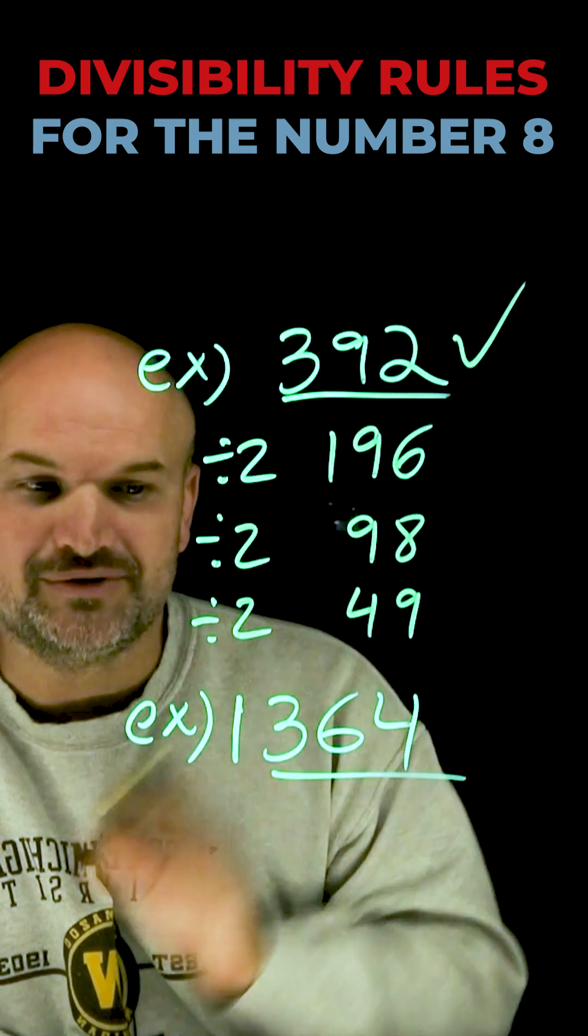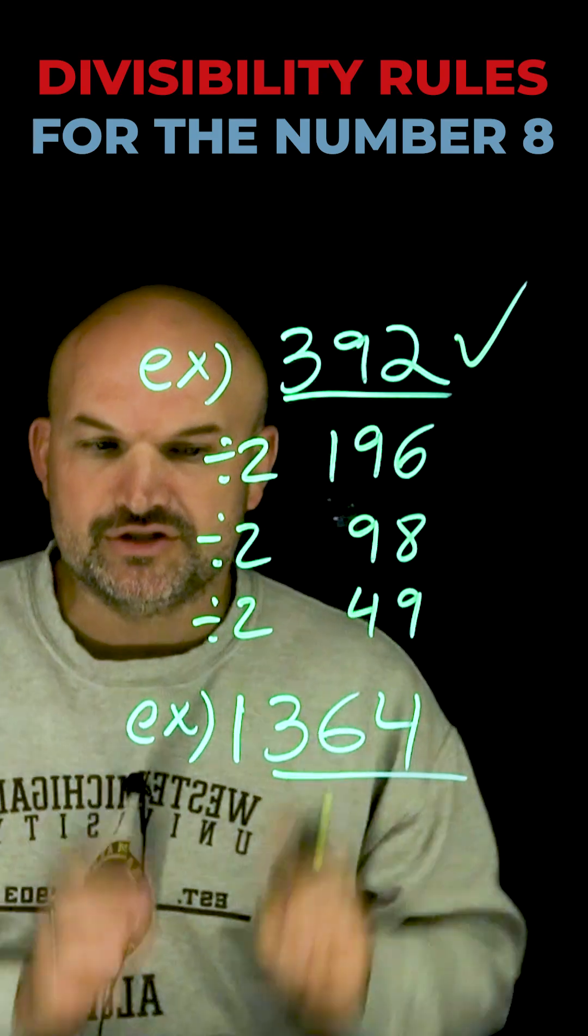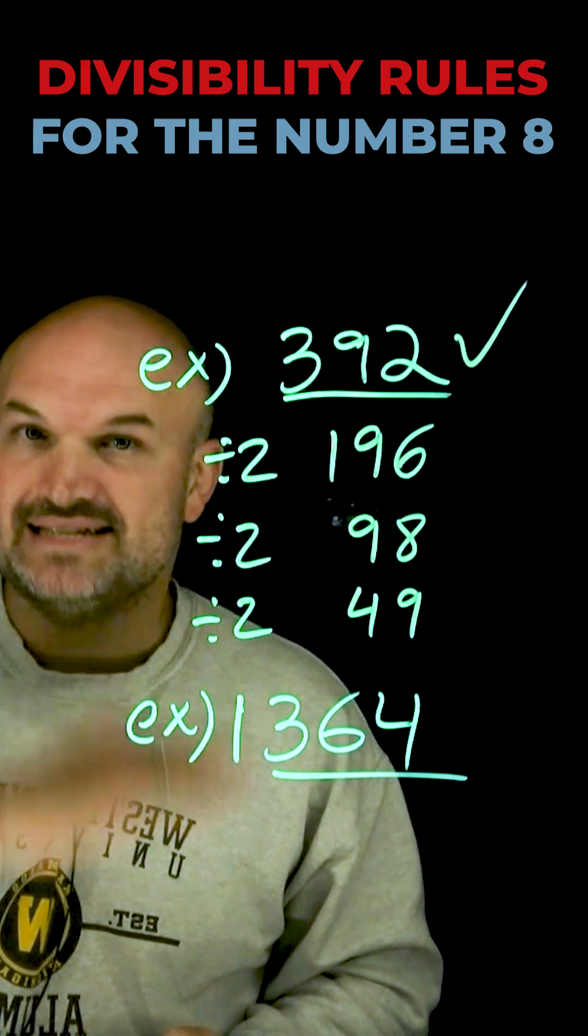Obviously, we have our three digits. Our last three digits are not 000, right? So, again, what we want to be able to do is determine, can I divide this by 2 three times?